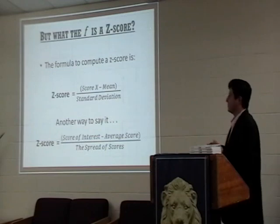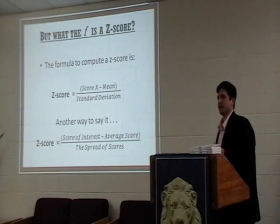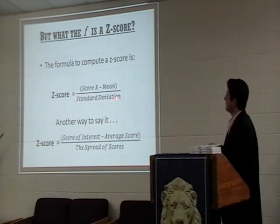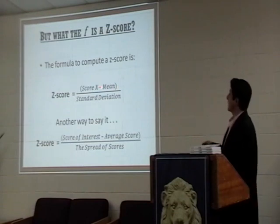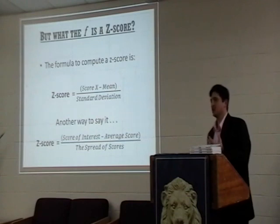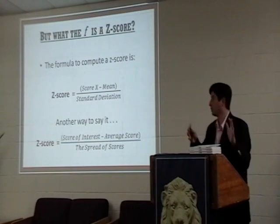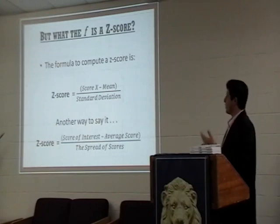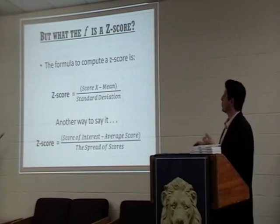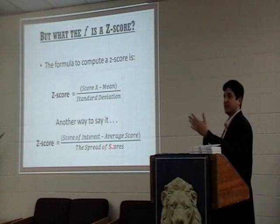The formula to compute a z-score is actually quite simple. You take the score of interest — say you got an 83 on an exam. You subtract the mean — say the class mean was 68. Then you divide by the standard deviation. The standard deviation is a statistic that essentially tells you how far apart scores are in a particular group. Essentially, this is a simple quotient: your score of interest minus the average score for the group, divided by the standard deviation or spread of scores.